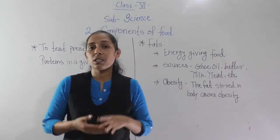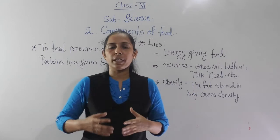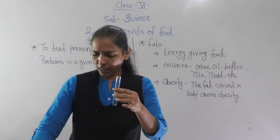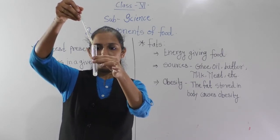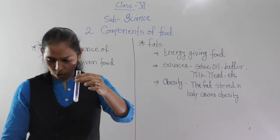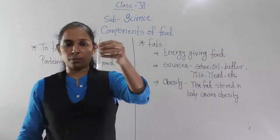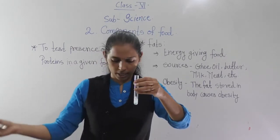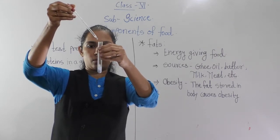So let's do the activity. The aim of our activity is to test the presence of protein in a given food sample. I will take one test tube and add some drops of milk into it. I have added some amount of milk. Now I will add two to three drops of copper sulphate solution, then mix it properly by shaking the test tube. Now I will add nine to ten drops of caustic soda, that is sodium hydroxide.